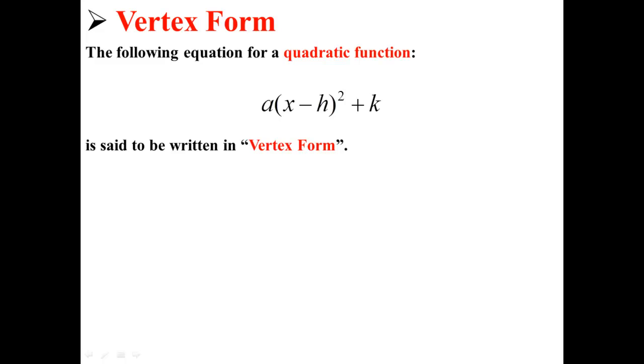The following equation for a quadratic function, a times x minus h squared plus k, is said to be written in vertex form. When an equation is in vertex form, h, k refers to the coordinates of the vertex of the parabola.